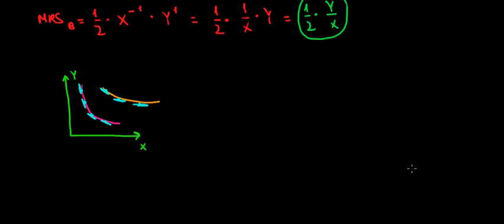Now we know that the slope tangent to the indifference curve is described by the MRS. So the MRS is the slope tangent to the indifference curve.